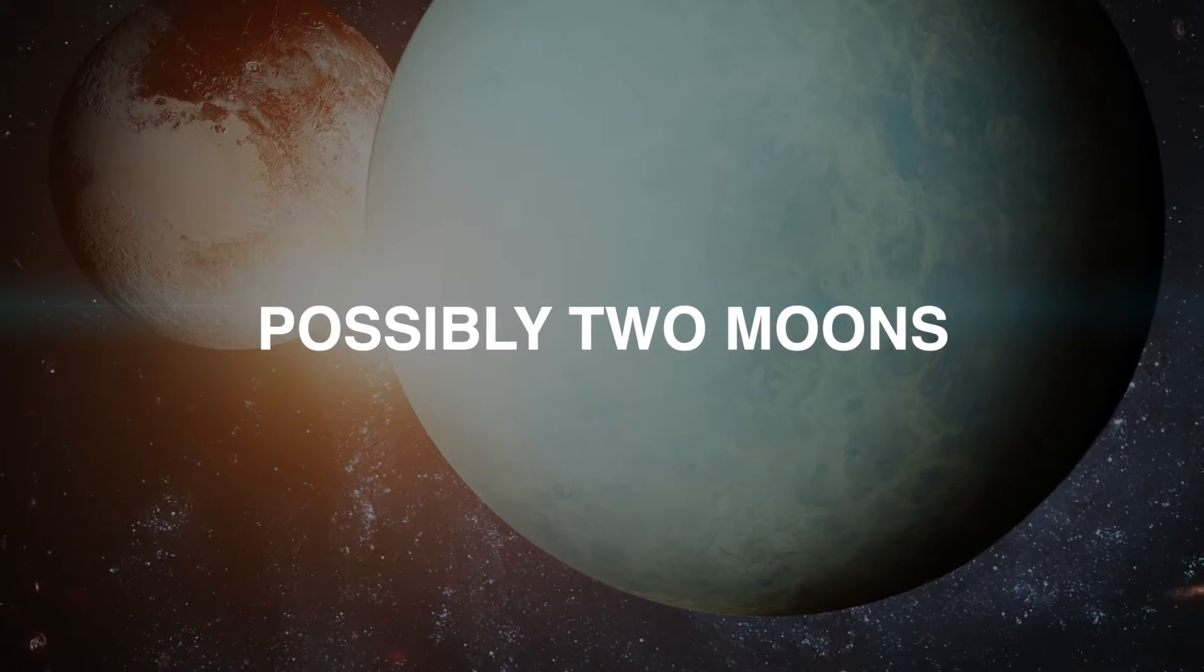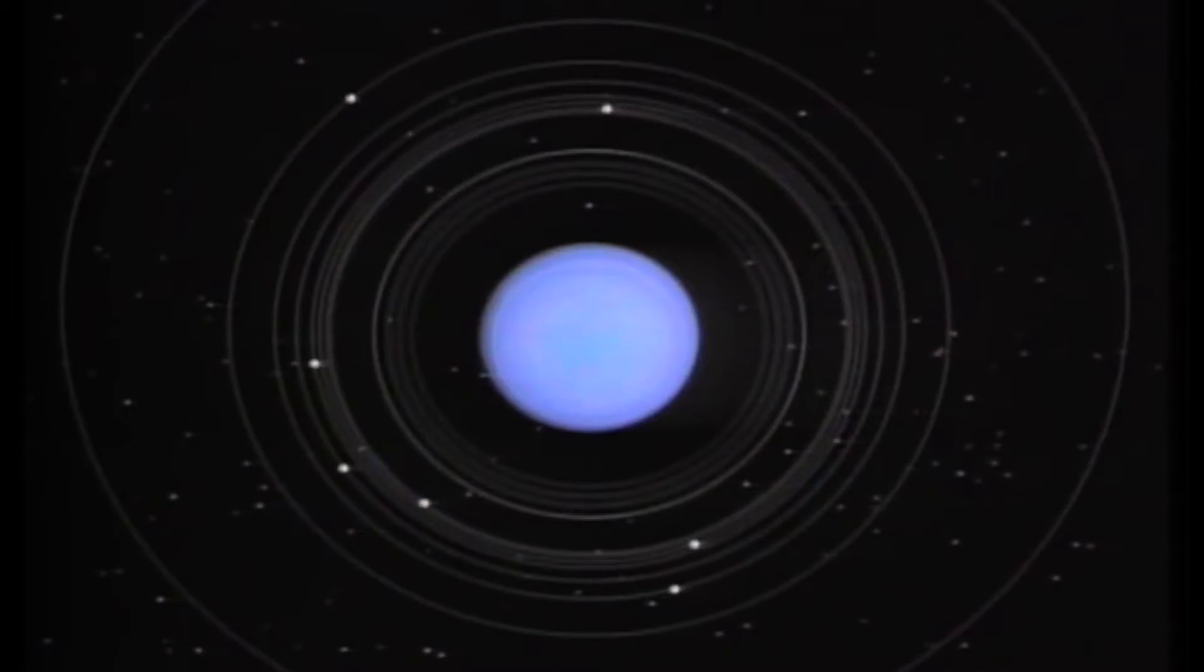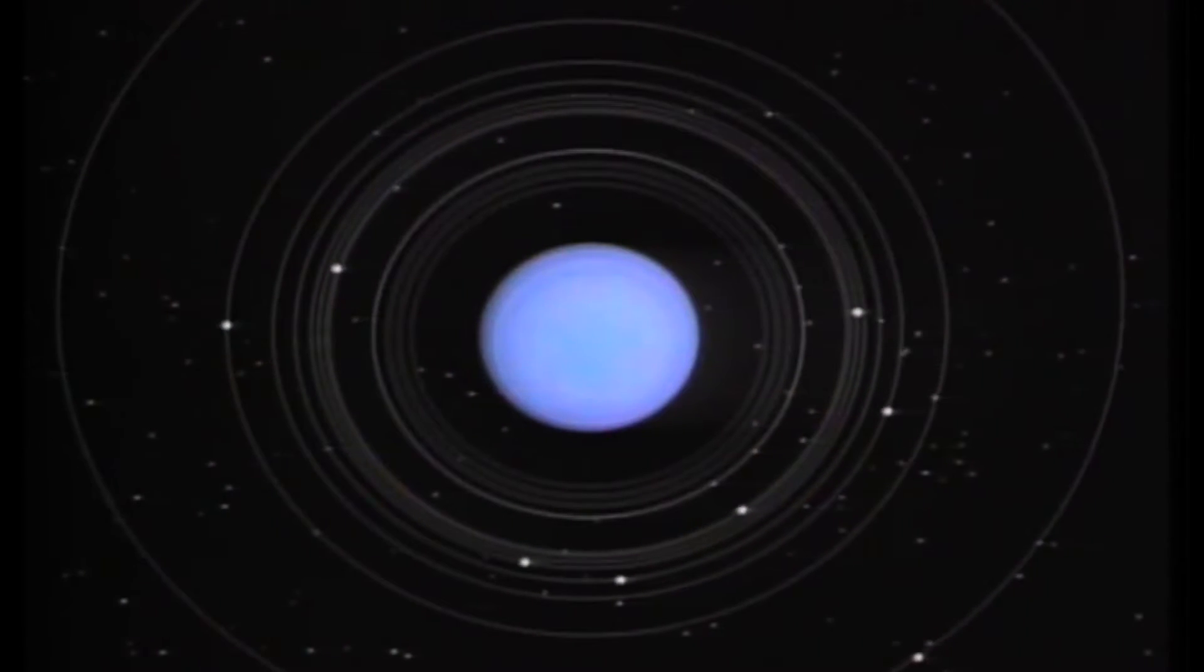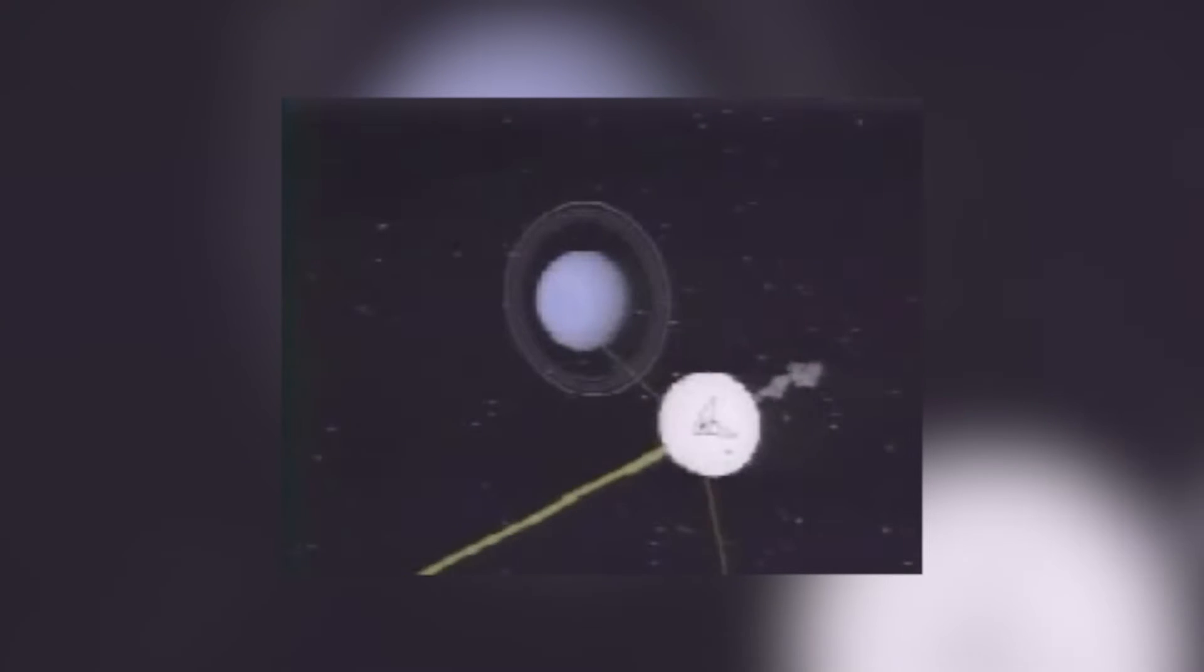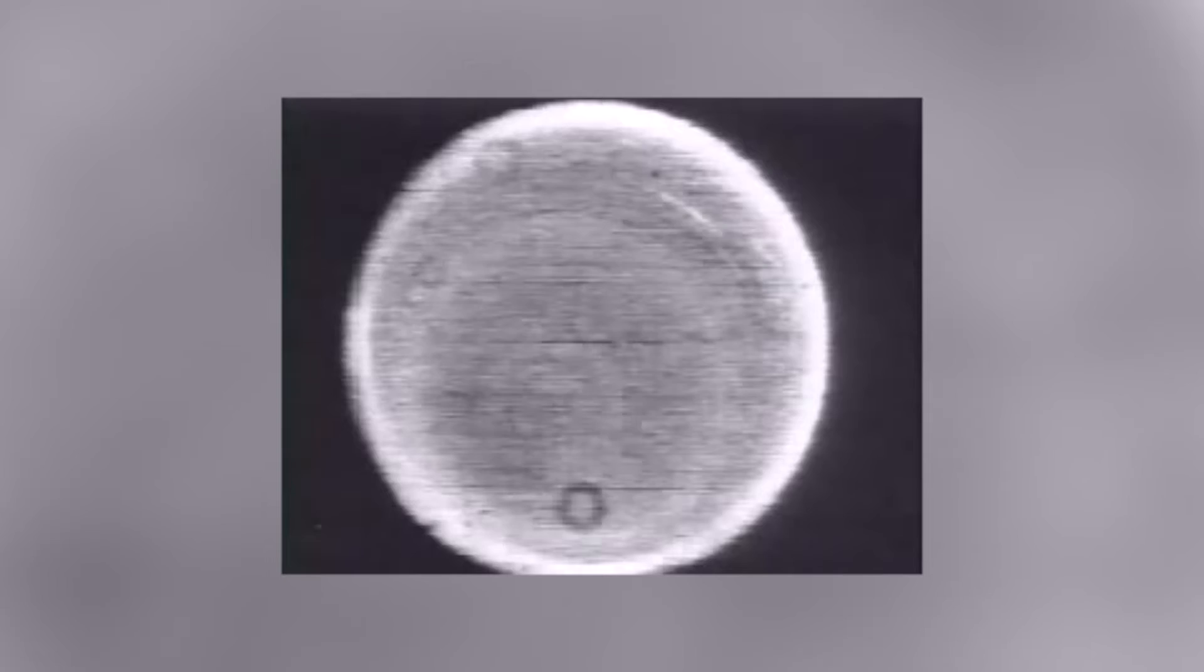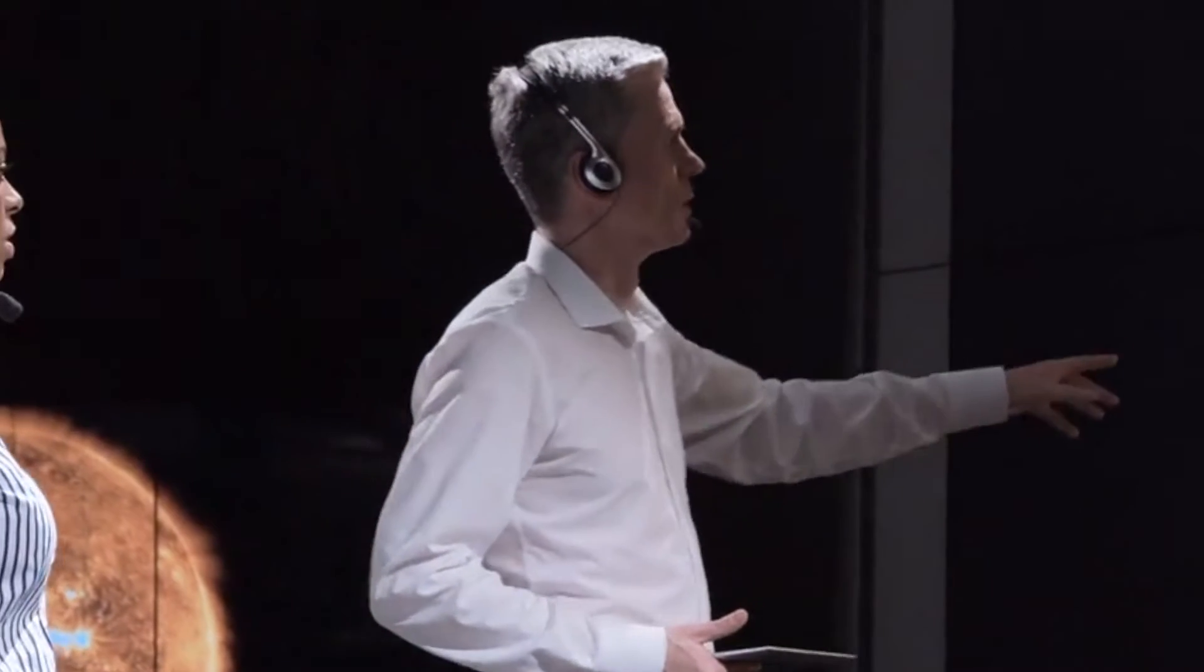Possibly two moons. When Voyager 2 flew past Uranus in 1986, ten new moons were discovered. According to planetary researchers of the University of Idaho, however, the probe missed several moons. When scientists looked through the data of Voyager 2, two astronomers discovered that the alpha and beta ring had rippling.